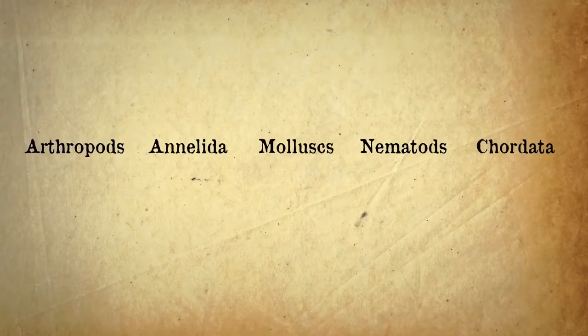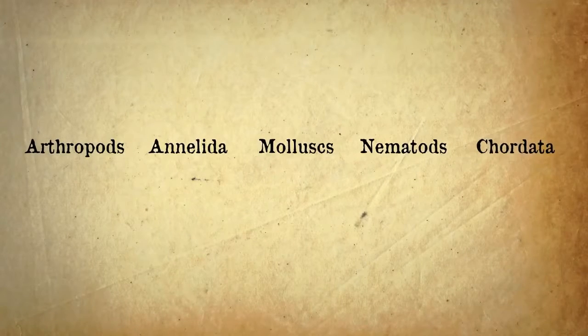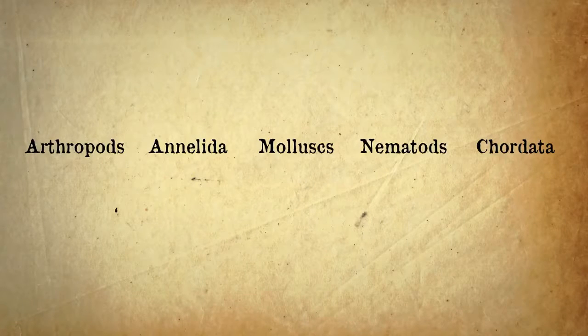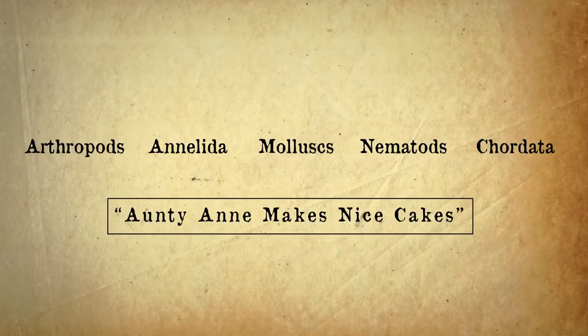The five main phyla are arthropods, annelids, mollusks, nematodes, and chordata. Make up a rhyme or acronym to help you remember them — Auntie Anne Makes Nice Cakes: A-A-M-N-C.